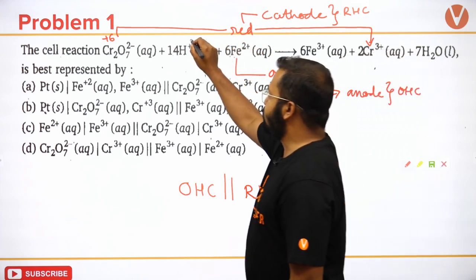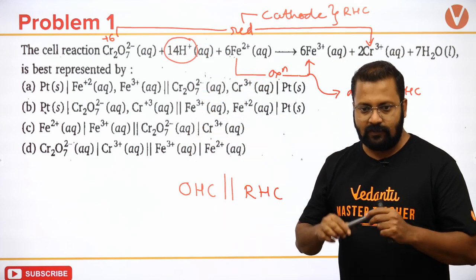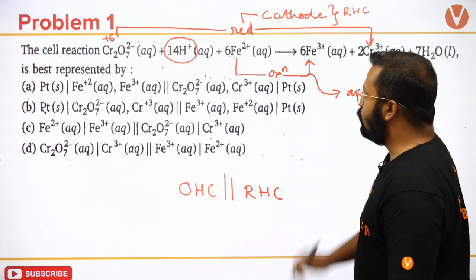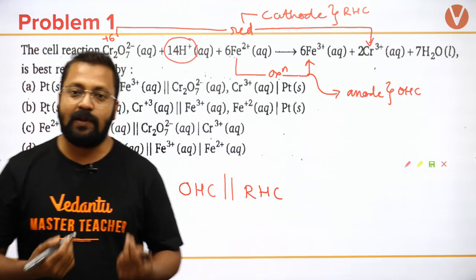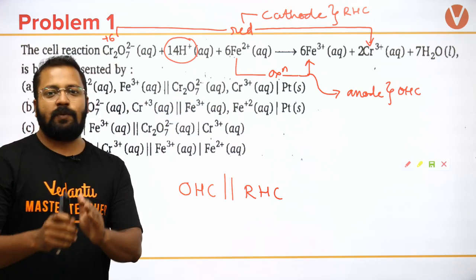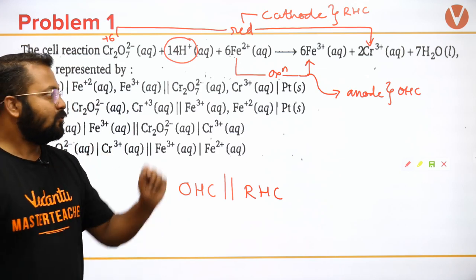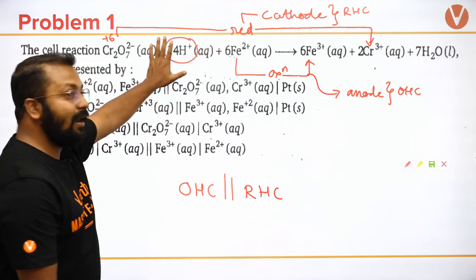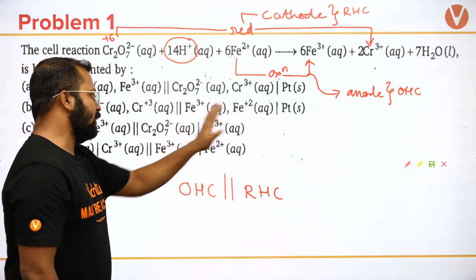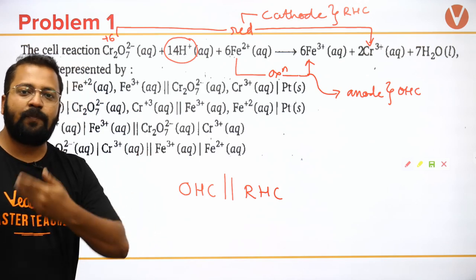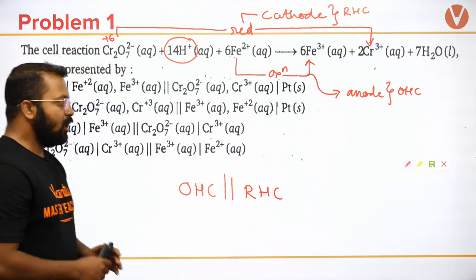Someone might ask: where should we include H⁺? H⁺ will not be included because H⁺'s oxidation state is not changing — H⁺ is just there to balance the reaction. So in this representation we will only include the species undergoing oxidation and reduction. On the left hand side I should have iron (Fe²⁺/Fe³⁺), and on the right hand side I should have chromium (Cr³⁺ from Cr₂O₇²⁻).